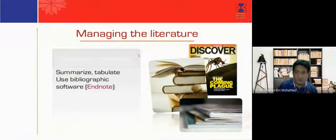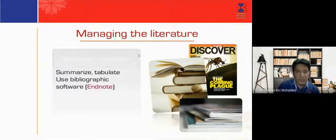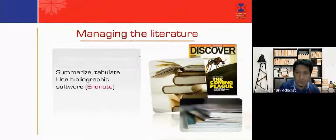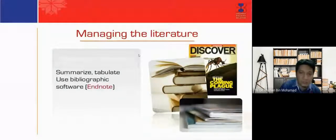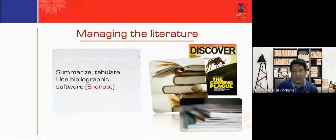After collecting references for your review article, you need to organize the information. There are several software tools available. Previously I used EndNote, but now I prefer Mendeley for summarizing, organizing tables, and managing citations — both for student theses and for journal publications. If you are comfortable with EndNote, that is fine too, but I recommend Mendeley.